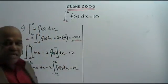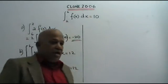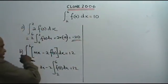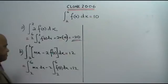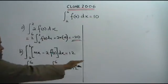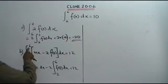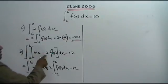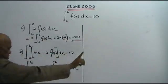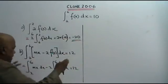Now let's go to Part B. You are asked to find the value of m. You are given this equation: the integral between 6 and 2 of (mx minus 2f(x)) dx equals 12. Now you break it up.